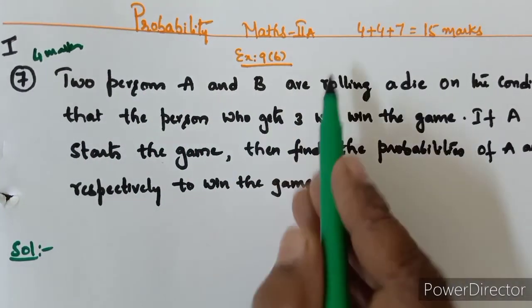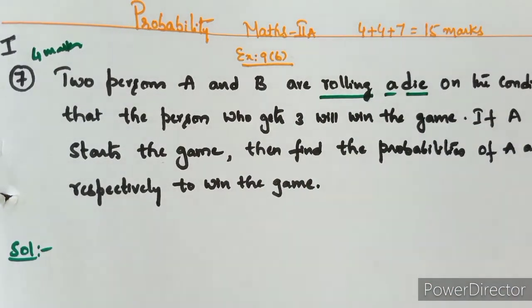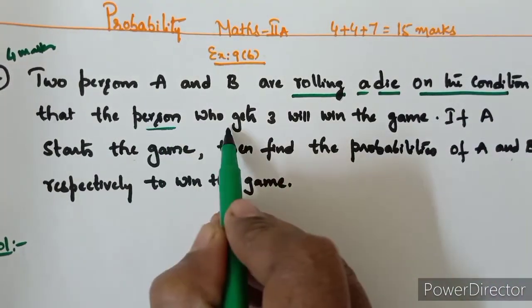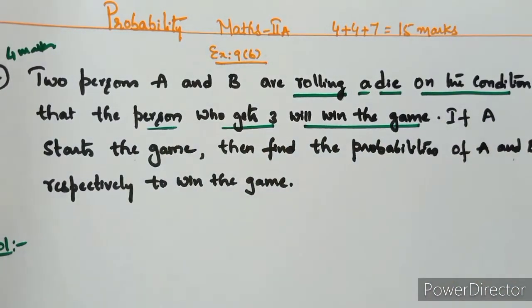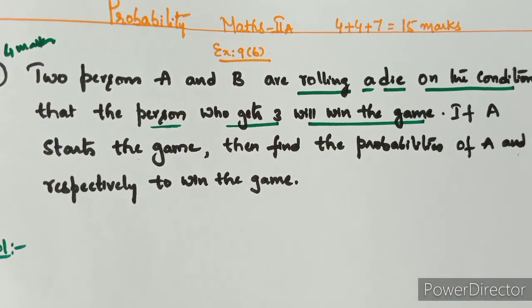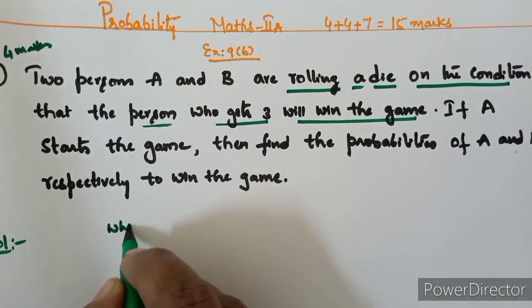Two persons A and B are rolling a die. The condition is that the person who gets 3 will win the game. This game is going on between two persons A and B. Rolling a die, the person who gets 3 will win the game.